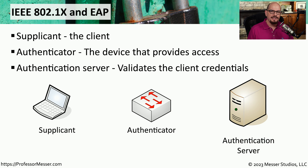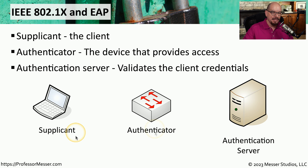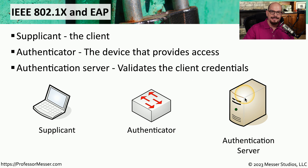This is usually a process that involves three separate components. One component is the end user or client — we refer to this device as the supplicant. There's also usually a switch or access point that you'd like to gain access to, which we refer to as the authenticator. There's also usually a back-end database containing all login credentials, such as an Active Directory database accessed via Kerberos or LDAP, or a RADIUS or TACACS database. We refer to this as the authentication server.